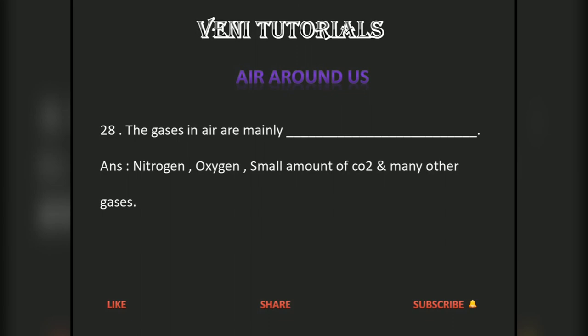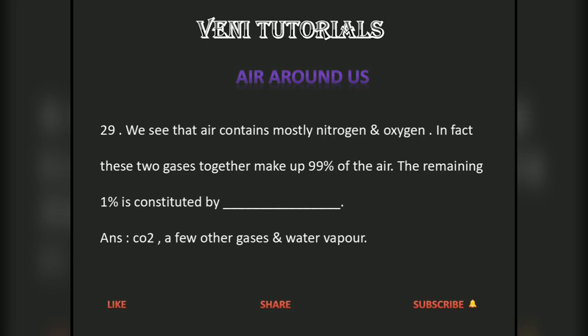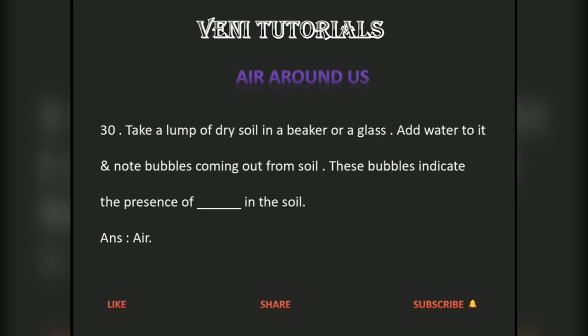The gases in air are mainly nitrogen, oxygen, a small amount of CO2, and many other gases. Nitrogen and oxygen together make up 99 percent of the air. The remaining one percent is constituted by CO2, a few other gases, and water vapor.